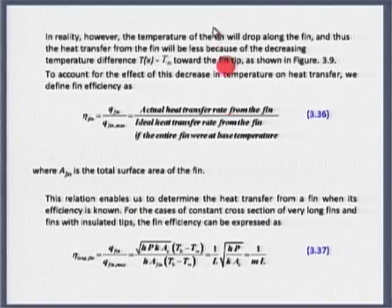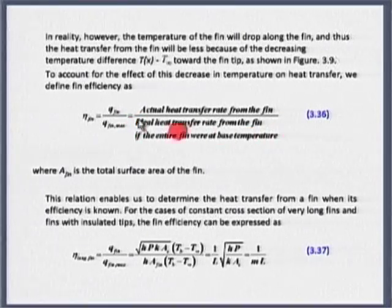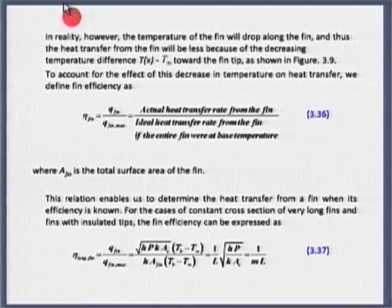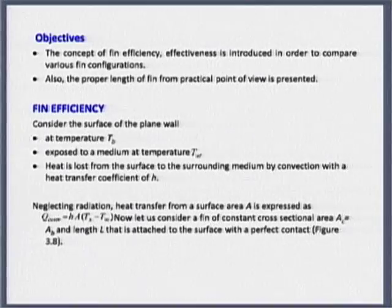In reality, the actual fin has H·A·(T − T∞), where T is the local temperature at any given location, and we have expressions for heat transfer through the fin for any given boundary condition. The actual heat transfer rate divided by the ideal — that is the best possible heat transfer rate — is what we are computing. The best possible rate is achieved when the entire fin is at the base temperature.